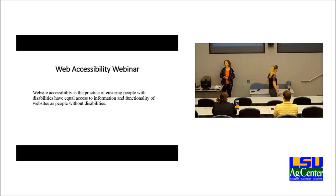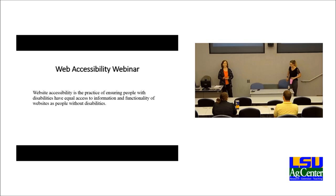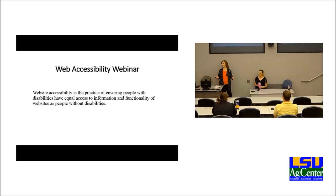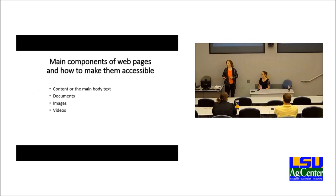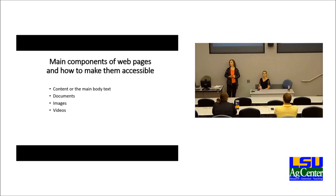So what is web accessibility? It's the practice of ensuring people with disabilities have equal access to information and functionality of websites as people without disabilities. My goal today is to give you good information to help you make your web pages accessible. I'll be discussing the main components of web pages and how to make them accessible. The main components are your content or main body text, documents, images, and videos.